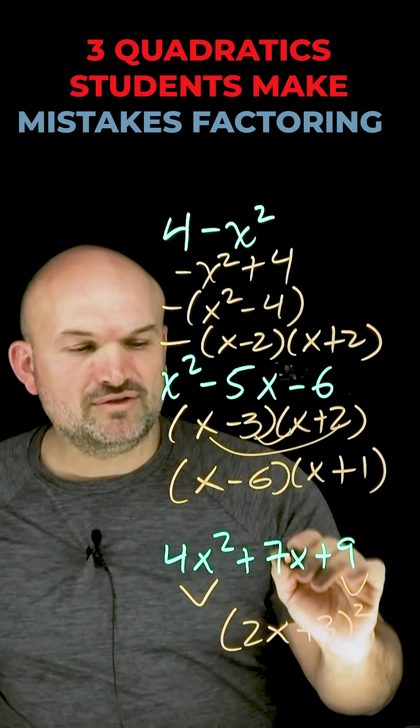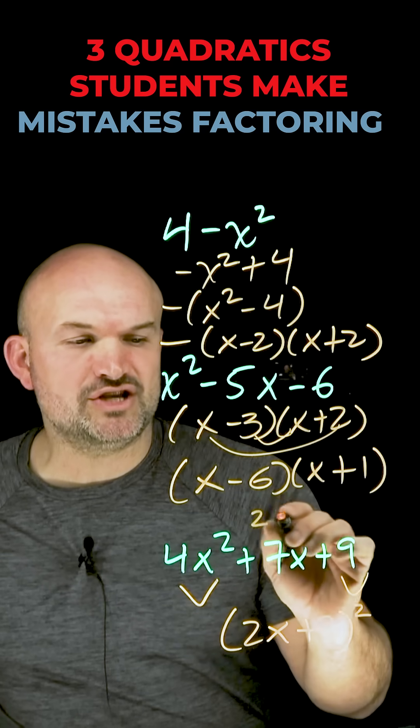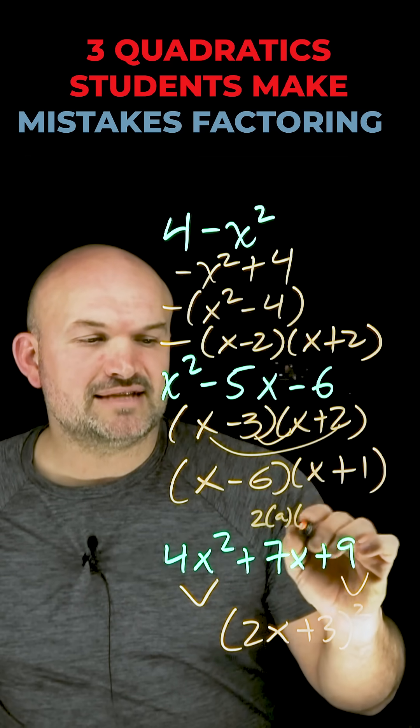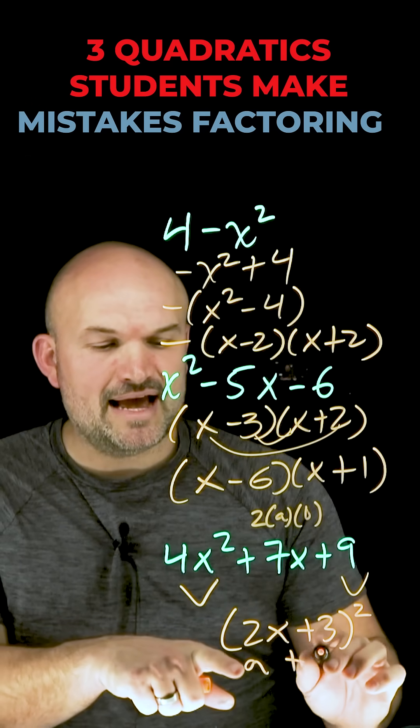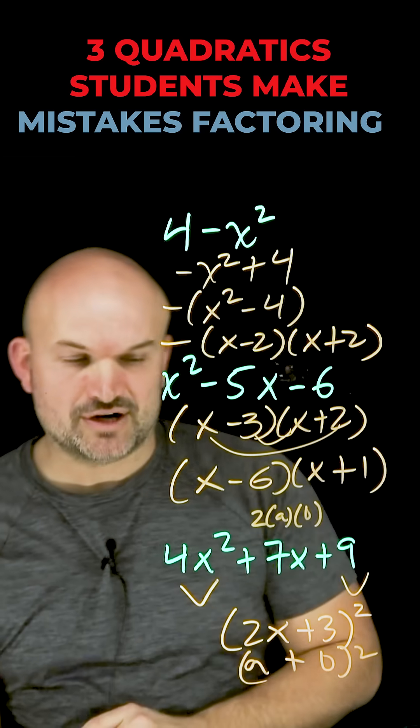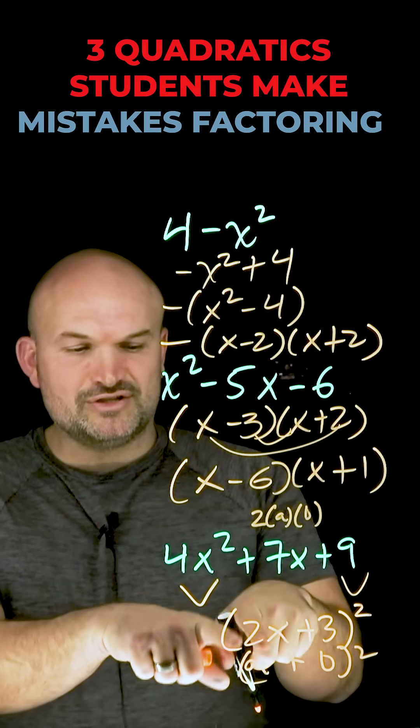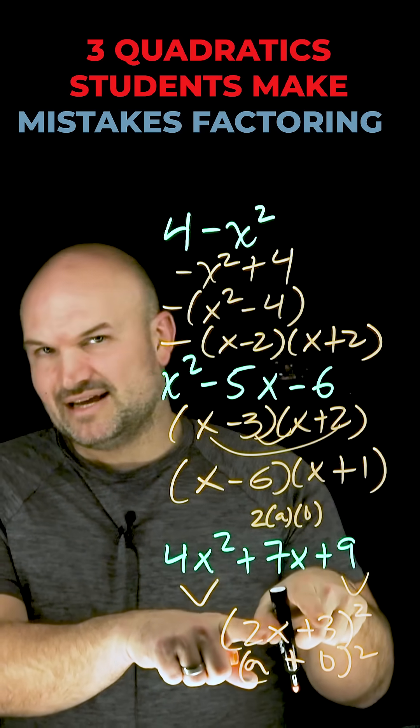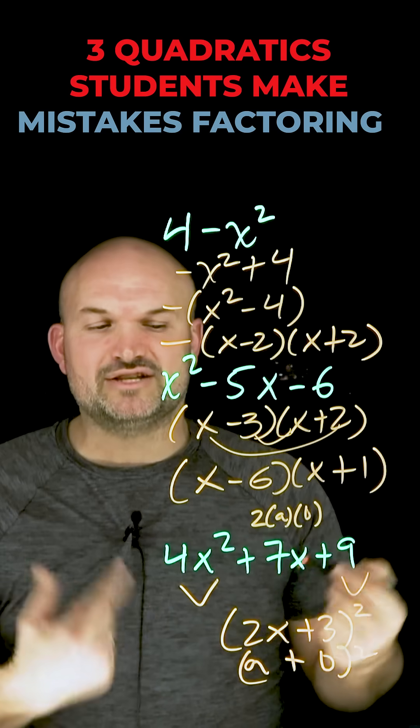Unfortunately, that only works when your middle term is 2 times a times b, where a represents your first term and b represents your last term. So in this case, if I were to do 2 times 2x times 3, that would give me 6x times 2, which would give me 12x.